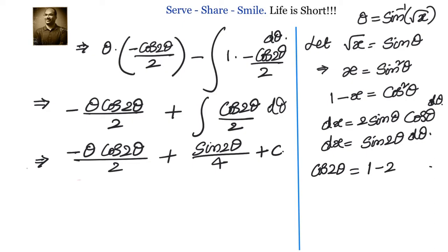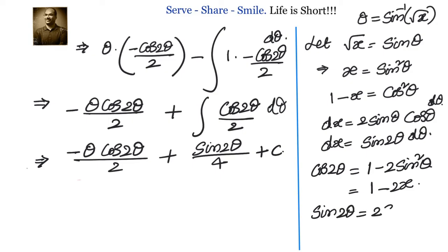We substitute back: cos2θ = 1 − 2sin²θ = 1 − 2x, and sin2θ = 2sinθ cosθ = 2√x · √(1−x), which we write as 2√(x(1−x)).